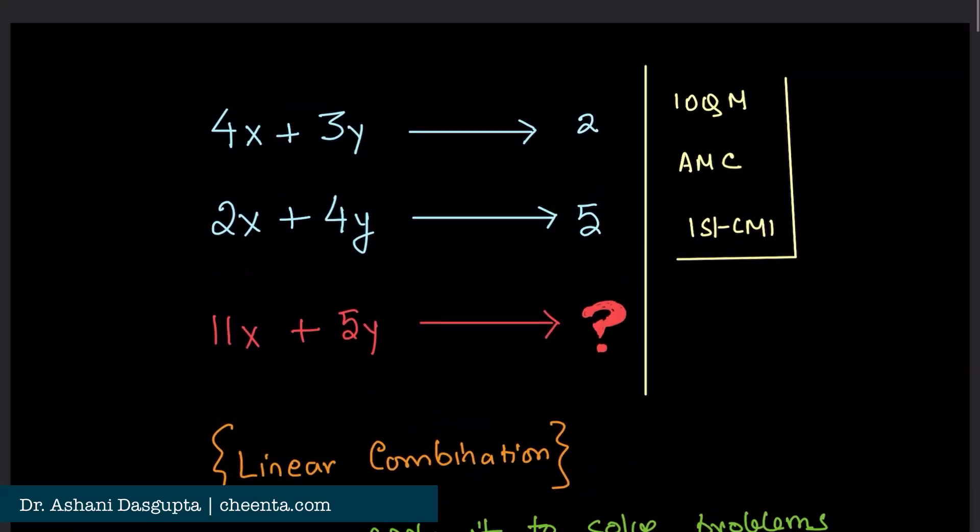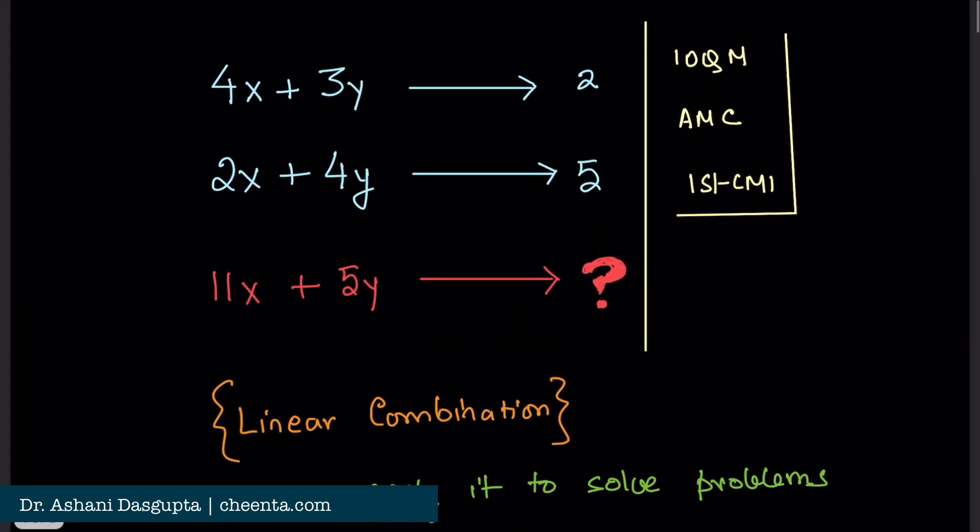The problem says that x and y are positive integers, such that when you divide 4x plus 3y by 7, the remainder is 2.